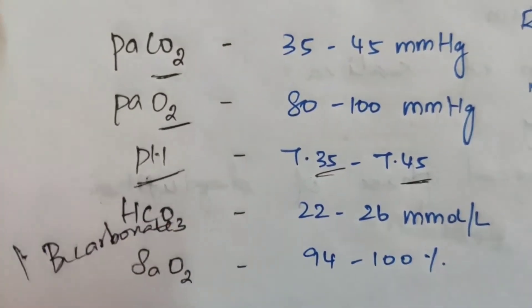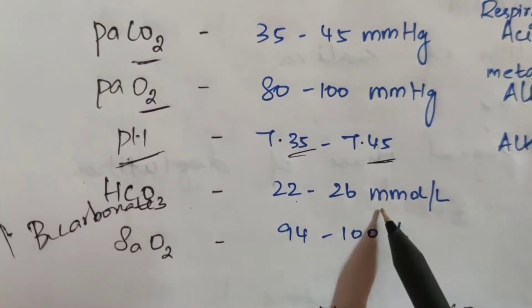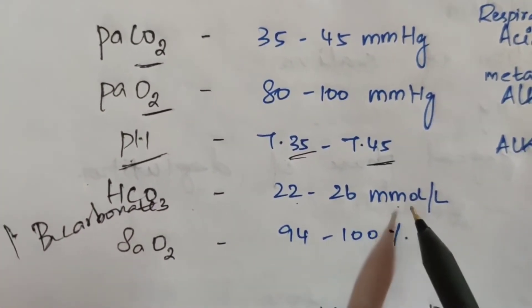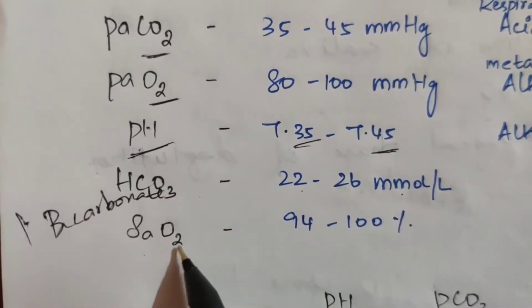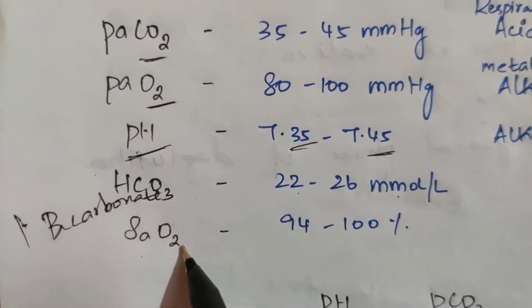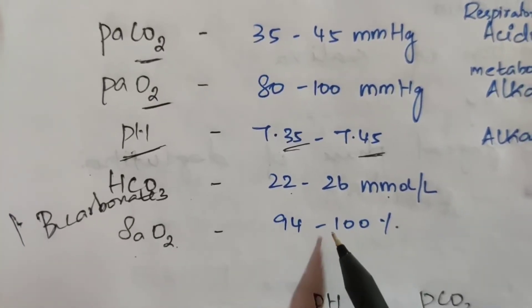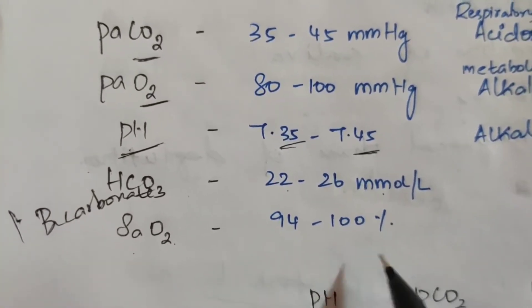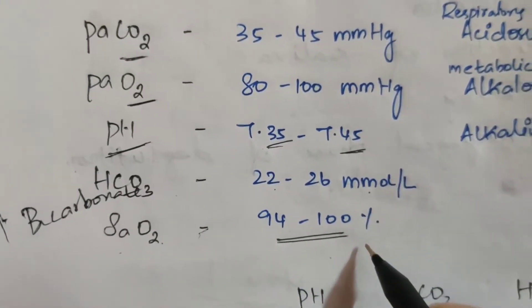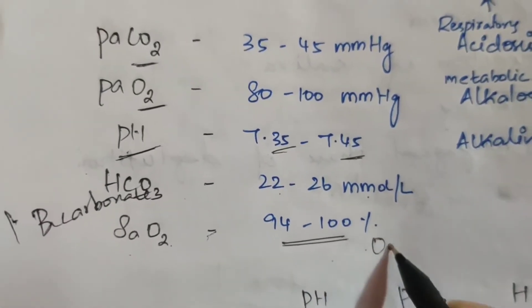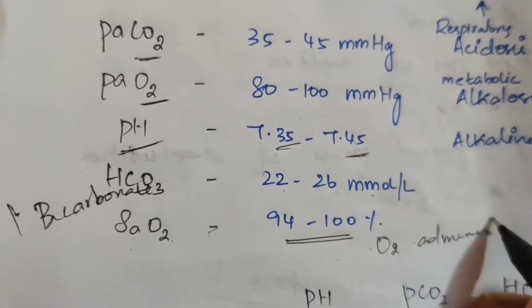HCO3 normal value is 22 to 26 mmol per liter. And SaO2 — saturation level — normal value is 94 to 100%. If the O2 saturation is low on the monitor, administer O2.